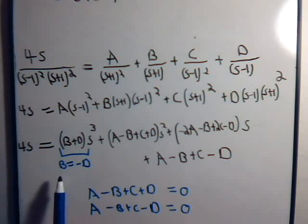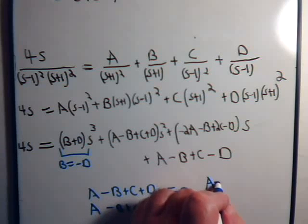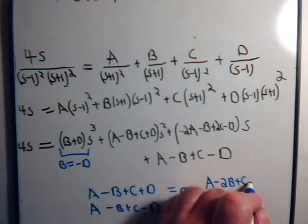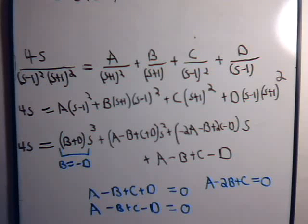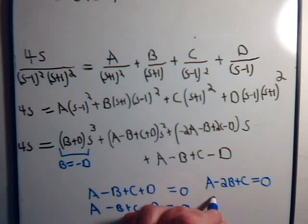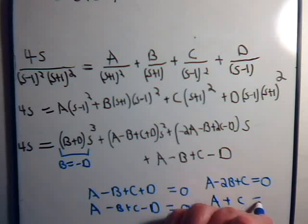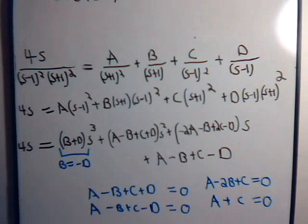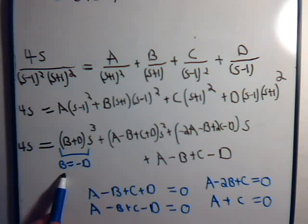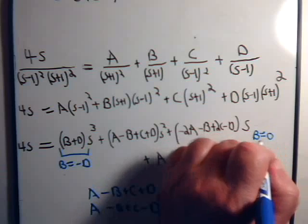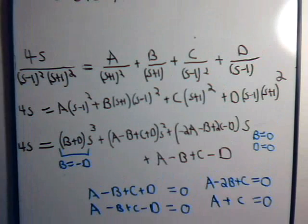Since D equals minus B, substituting into the constant equation gives A minus 2B plus C equals zero. And since D equals minus B, the D and B terms cancel in the s squared equation, giving A plus C equals zero. The only way both equations can be satisfied is for B to equal zero, which means D also equals zero.